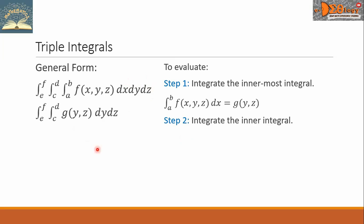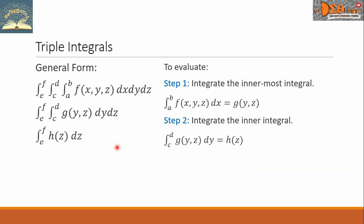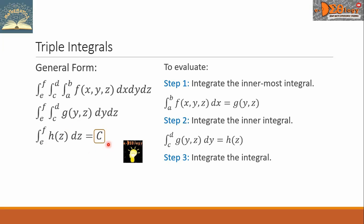Then step two: integrate the inner integral, which is this integral here. We can copy this inner integral here, then integrate with respect to y, which means z is taken as constant. When we simplify this, the answer will be a function h with respect to z. And this new function, we're going to substitute in here, and it will be like this. We can see now that the double integral becomes a single integral. Then step three is to integrate this integral, and later we will have an answer which is a constant c. This will be the final answer for the triple integral.